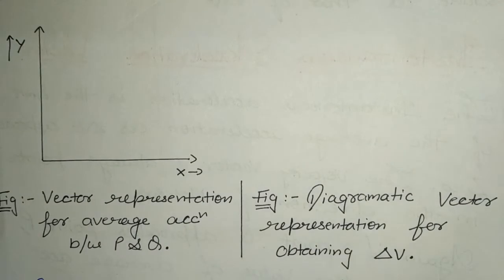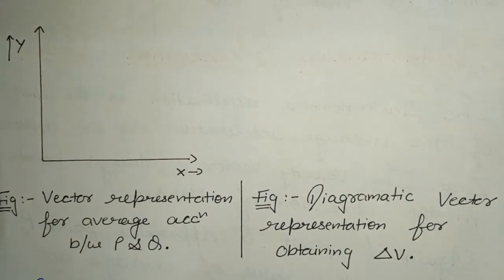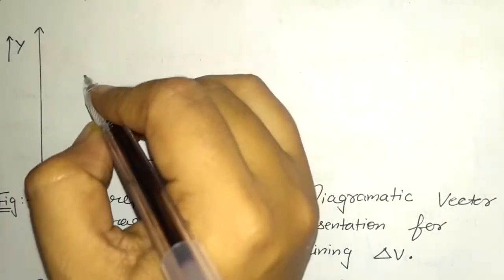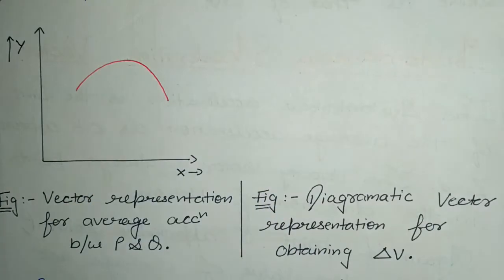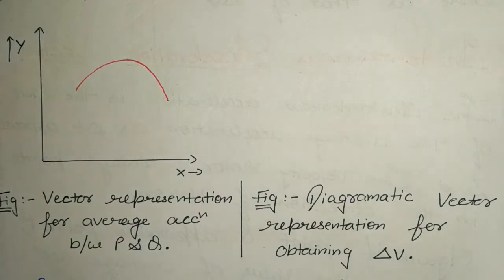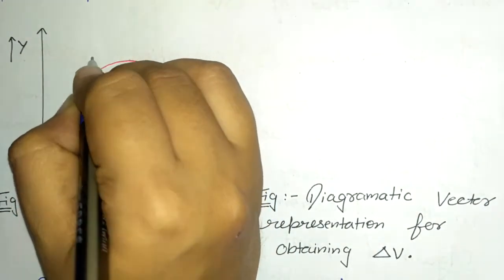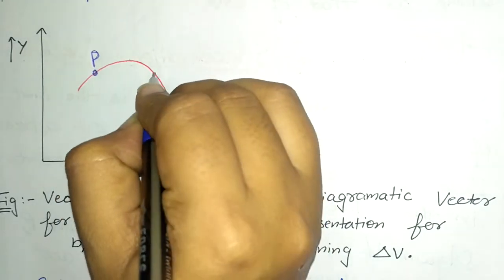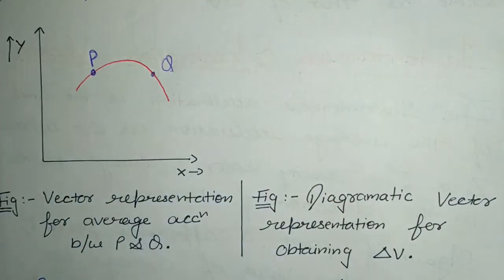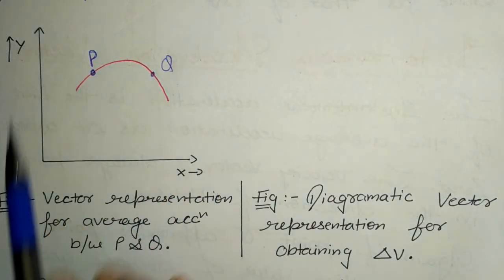To understand the concept of average acceleration vector, we suppose that a particle is moving from P to Q in the XY plane. Let's say there is a particle taking a path, and we locate two points P and Q. So here is point P and here is point Q, and the particle moves from P to Q in the XY plane.